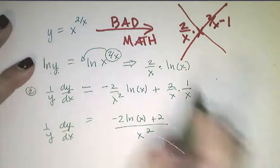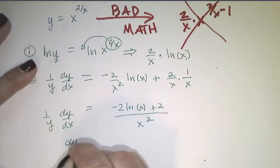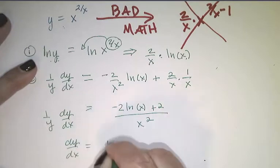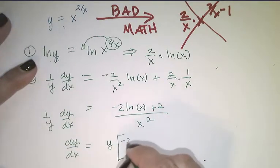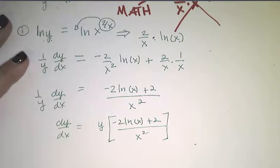Now remember, what I'm looking for is dy/dx. So I need to multiply both sides by y. Therefore dy/dx equals y times negative 2 ln(x) plus 2 over x squared. I'm almost done,